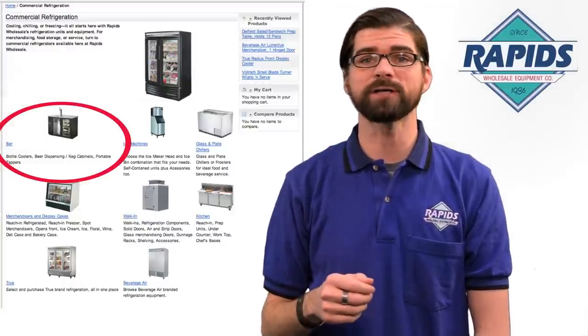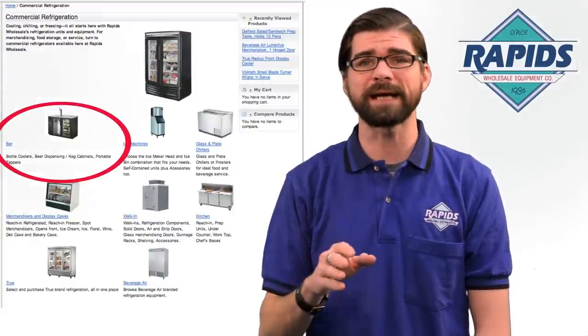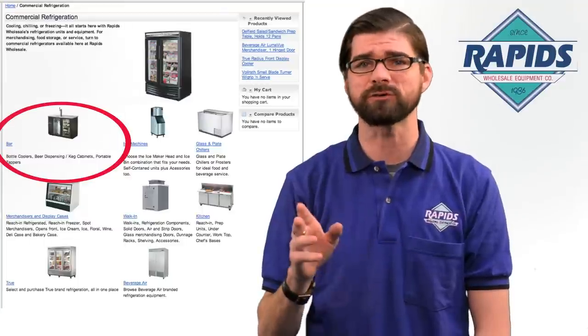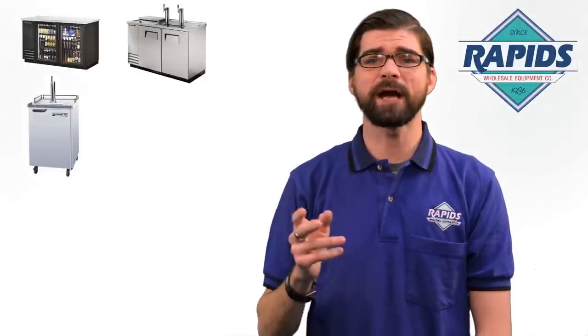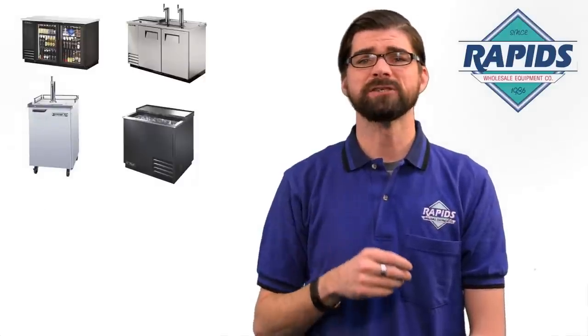Under the bar category is where you'll find commercial coolers ideal for any bar, pub, tavern, or restaurant. Here you'll find bottle coolers, tons of beer dispensers—our specialty—kegerators or portable keg tappers, as well as glass chillers.